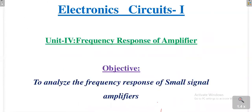Welcome to the course of Electronic Circuits 1, Unit 4: Frequency Response of Amplifiers. The objective of this unit is to analyze the frequency response of small signal amplifiers.